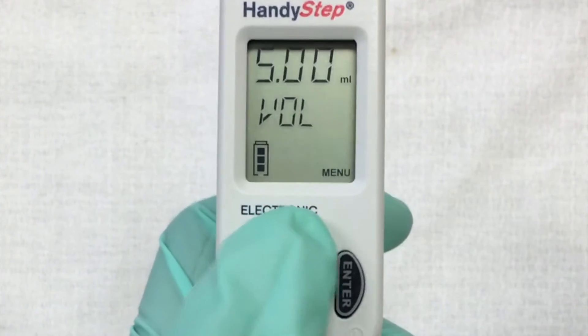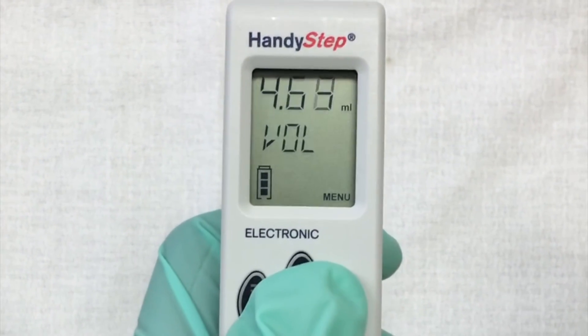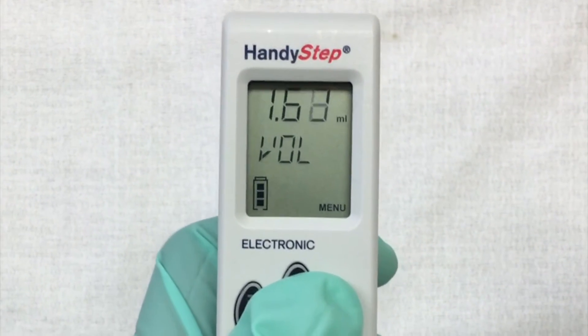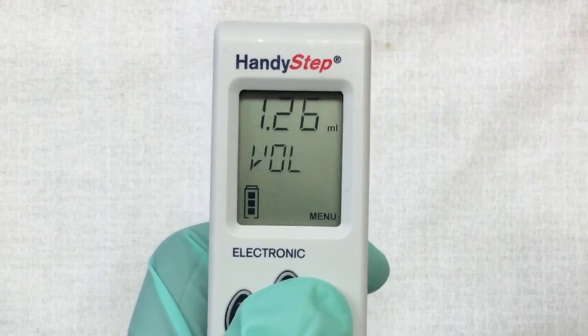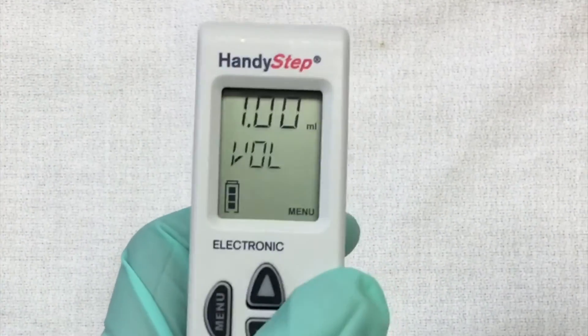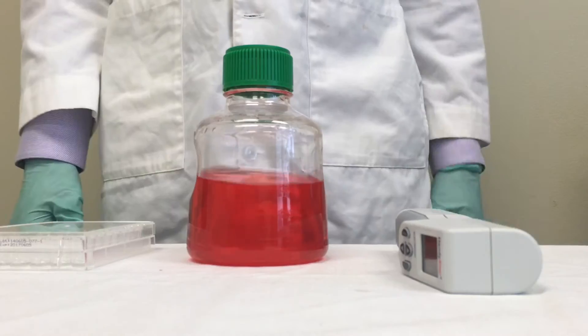The top number shows the volume you want to dispense. Underneath that number is the number of steps you can dispense at that volume. To adjust the volume, hit the menu button and use the arrows to adjust the volume. We are going to set ours to 1 milliliter. When you are finished finding your volume, hit the enter button to save it.